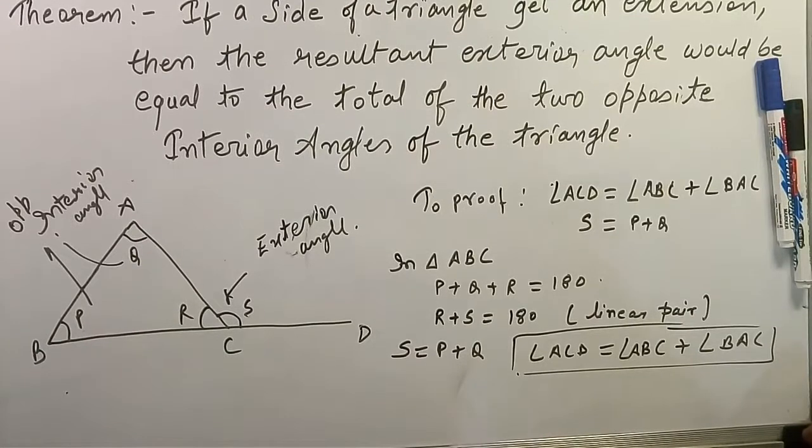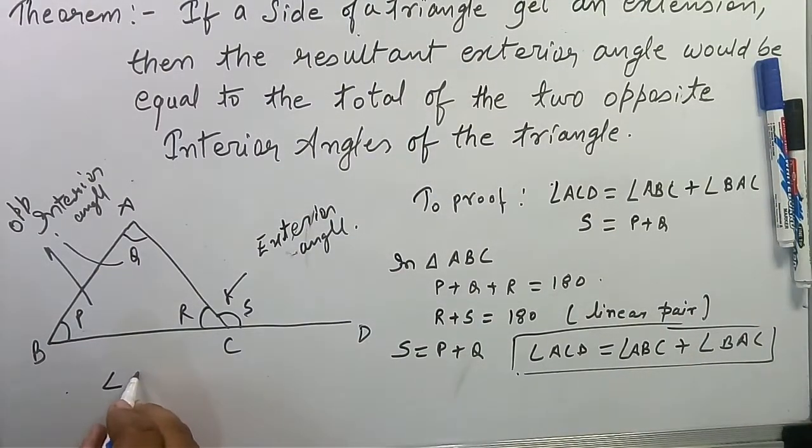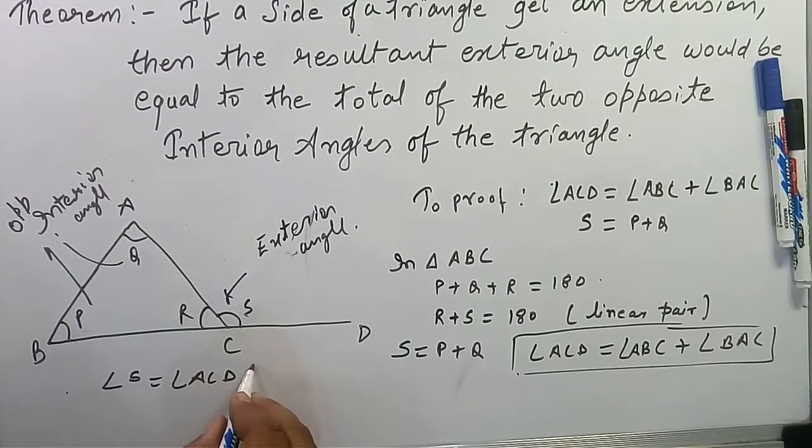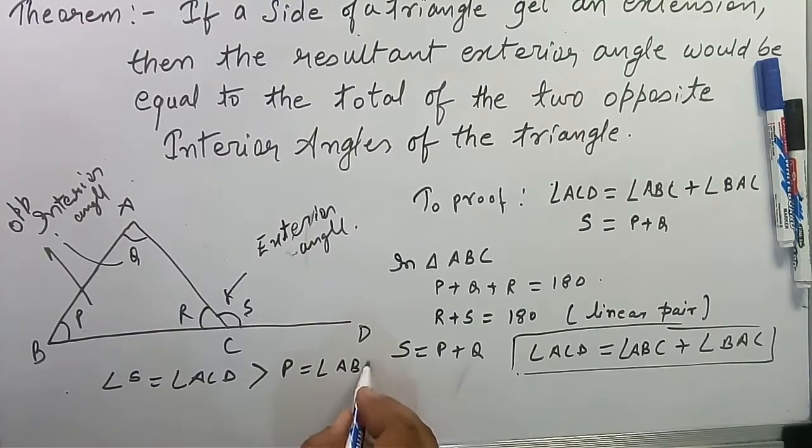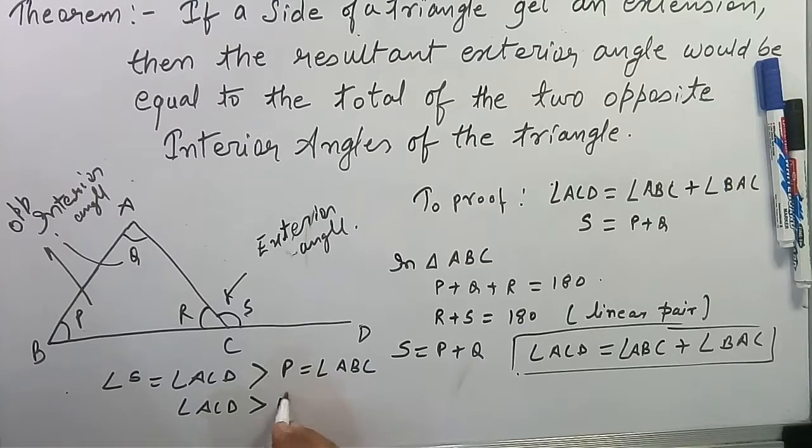What are the other conclusions of the Exterior Angle Theorem? This angle S, which equals angle ACD, is always greater than P, which is angle ABC, and also greater than Q, which is angle BAC. So the exterior angle of a triangle is always greater than either individual opposite interior angle.